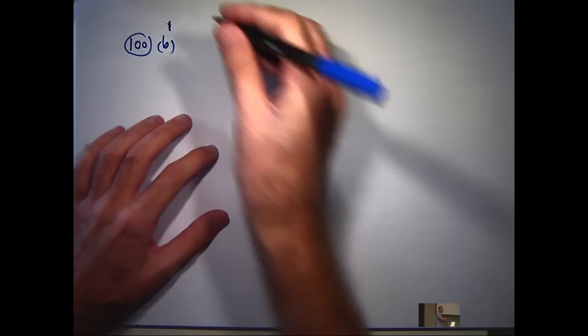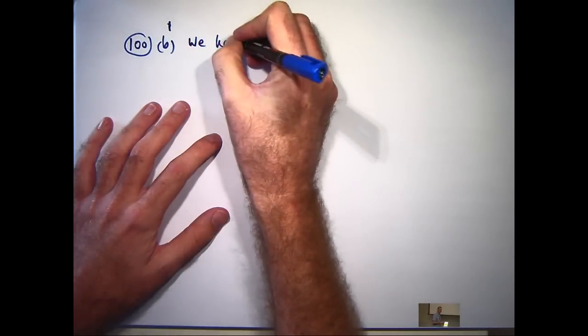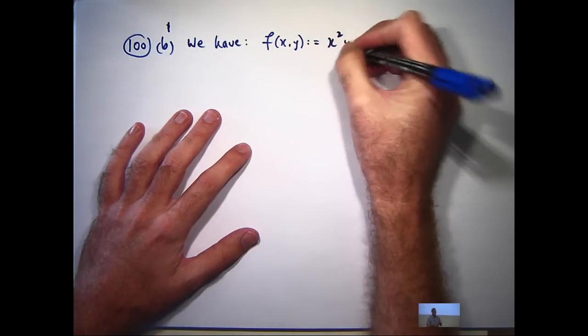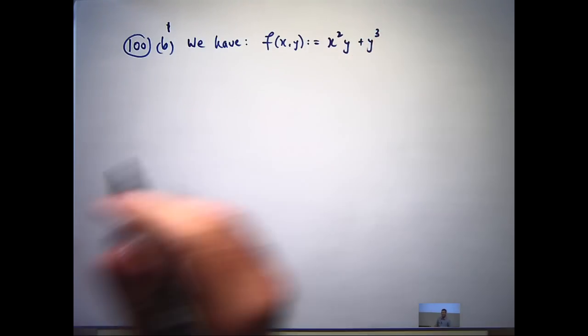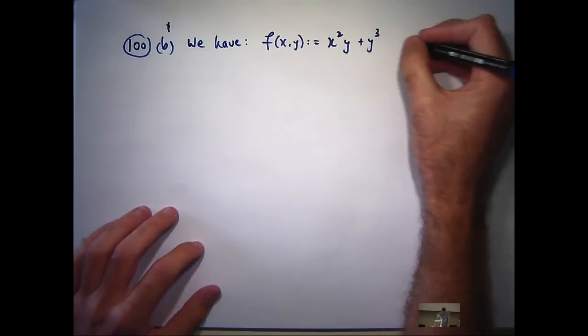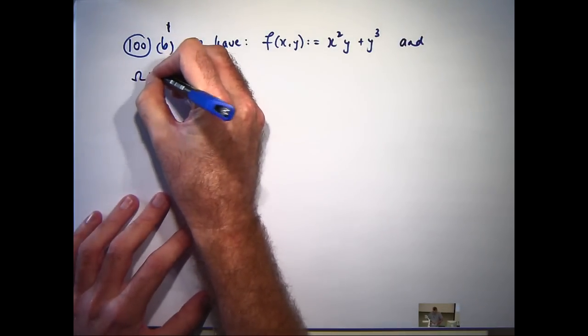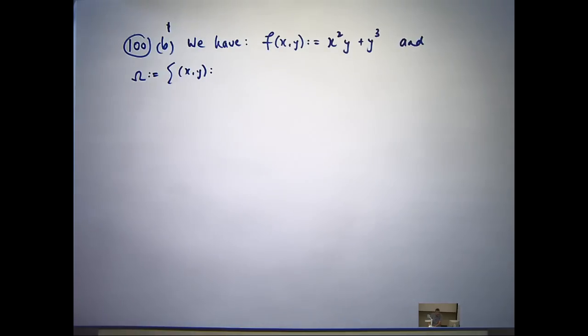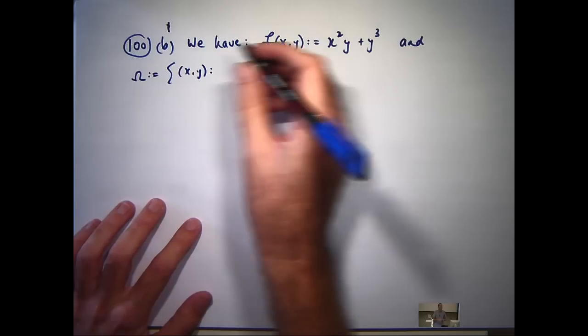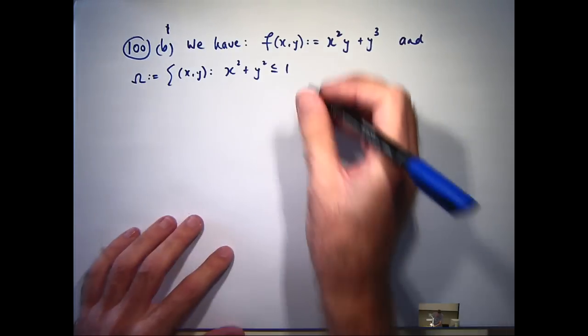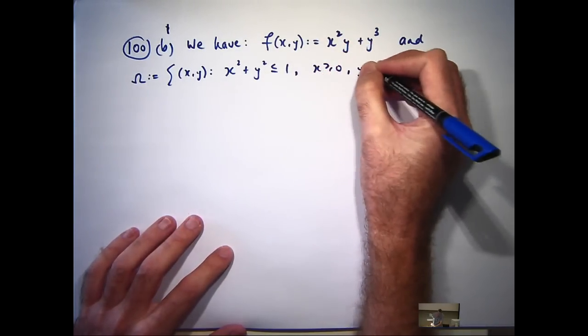All right, 100b. You have the following function of two variables defined in this way, and our region of integration, our two-dimensional region, is the set omega. It's those x and y values in the xy plane such that x squared plus y squared is less than or equal to 1, and x and y are non-negative.